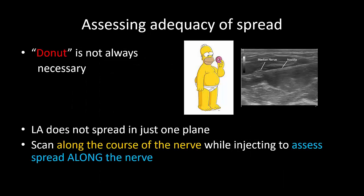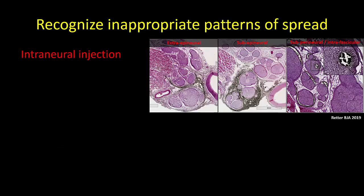Repositioning to achieve circumferential spread is not always needed. Remember that the local anesthetic does not just spread in one cross-sectional plane but travels up and down along the nerve. So scan along the course of the nerve while injecting to assess the spread and where the local anesthetic is going before deciding if you actually need to reposition the needle tip. Finally, it is just as important to recognize inappropriate local anesthetic spread. I do not recommend deliberate intraneural injection, which for me means any injection beneath the epineurium.